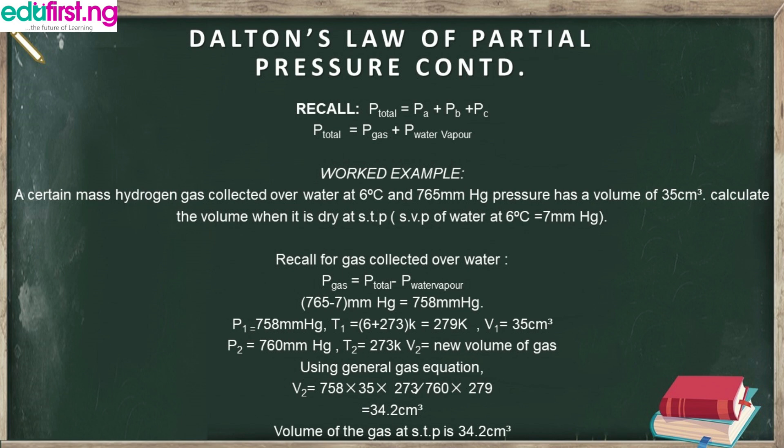To get the actual pressure of the gas, we make P_gas the subject of the Dalton's Law formula: P_gas equals P_total minus P_water_vapor. At 6 degrees Celsius, the total pressure is 765 mmHg and the vapor pressure of water at 6 degrees Celsius is 7 mmHg. Subtracting gives us 758 mmHg. So P₁ equals 758 mmHg.